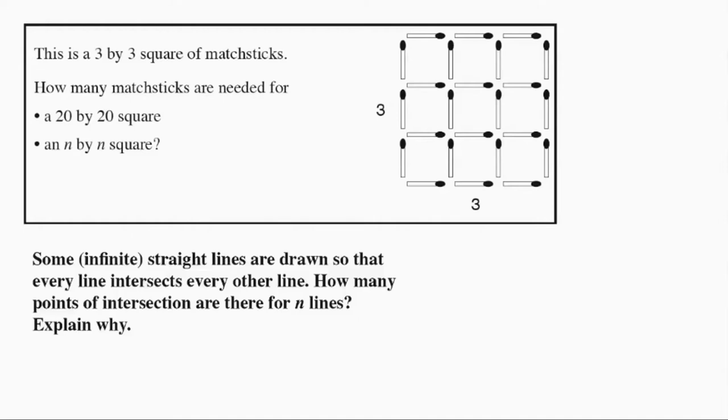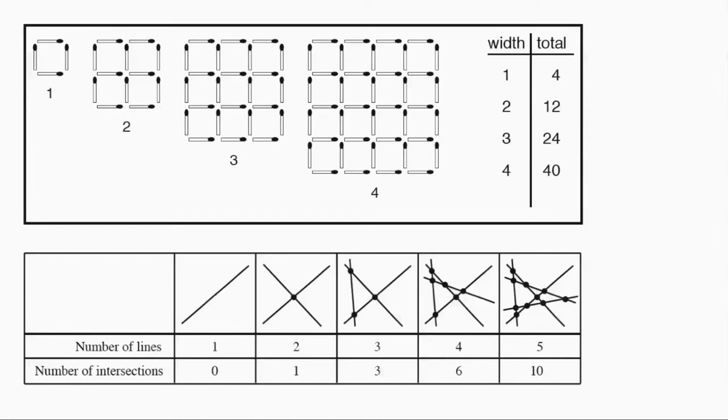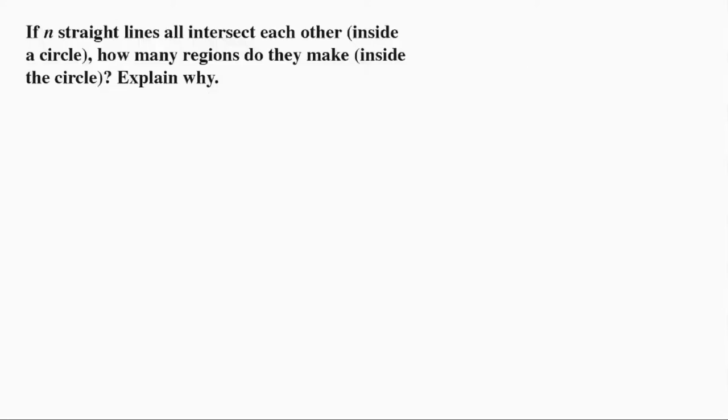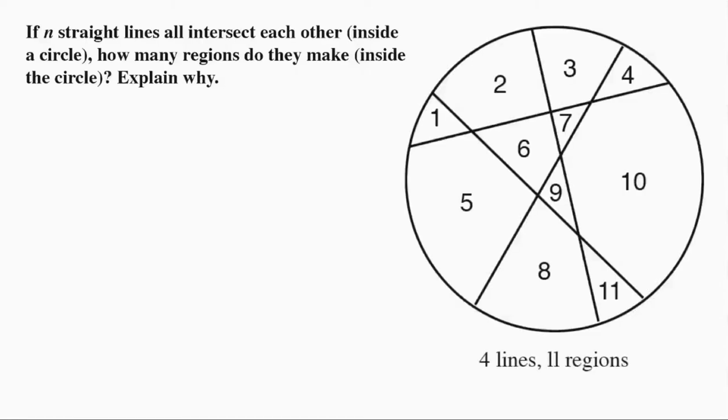Whereby we generate a set of examples and then look for a rule that fits the resulting numerical data. For some tasks such as this one, this might well be the best approach. For example, it is difficult here to see how these four lines have produced 11 regions.